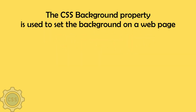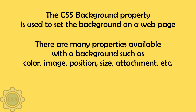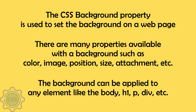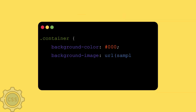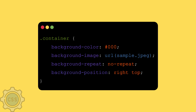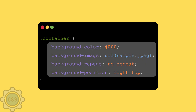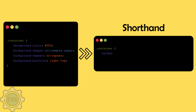The CSS background property is used to set the background on a web page. There are many properties available with background, such as color, image, position, size, attachment, etc. The background can be applied to any element like the body, h1, paragraph, or division. For example, here we have the background with various property values separately defined. But now you can convert this set of rules in a single line — the shorthand. You give the background-color as the first value, then a space, then the URL. Each value is separated by a space.